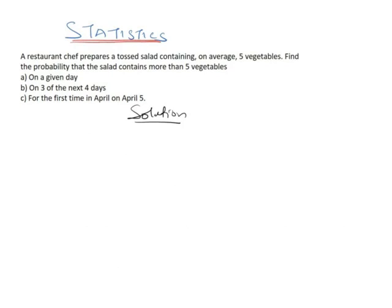For part B of the question, we are told to find the probability that the salad contains more than five vegetables on three of the next four days. This is clearly showing us it's a binomial distribution. Since we have the probability that the salad contains more than five vegetables on a given day from A as 0.384, we'll continue with this.